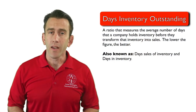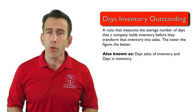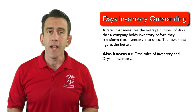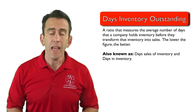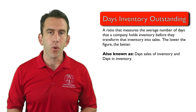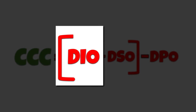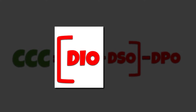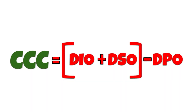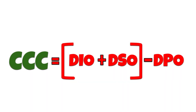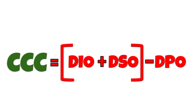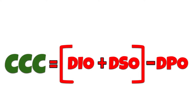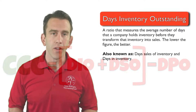Days Inventory Outstanding is also known as Days Sales of Inventory and Days In Inventory. It is one component of the cash conversion cycle, or cash-to-cash cycle time, which you can learn more about by clicking on a link in the description.